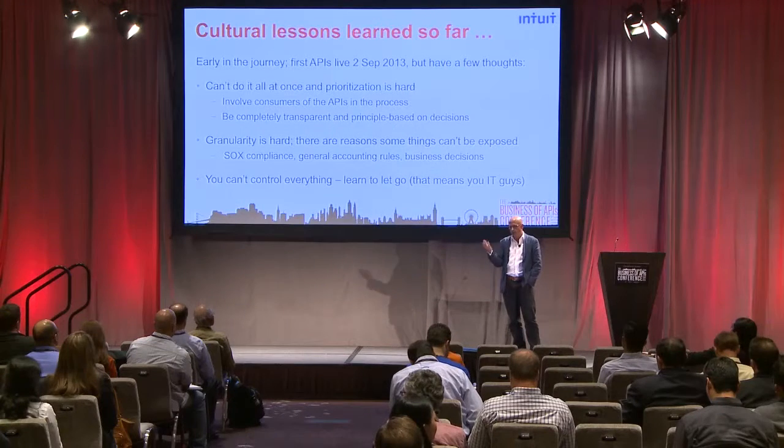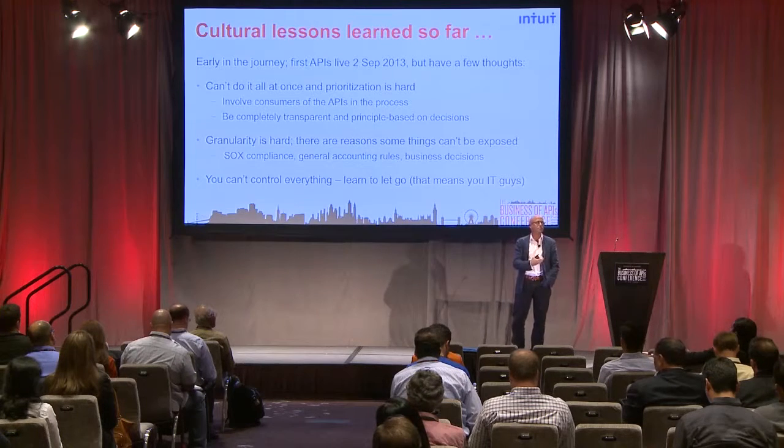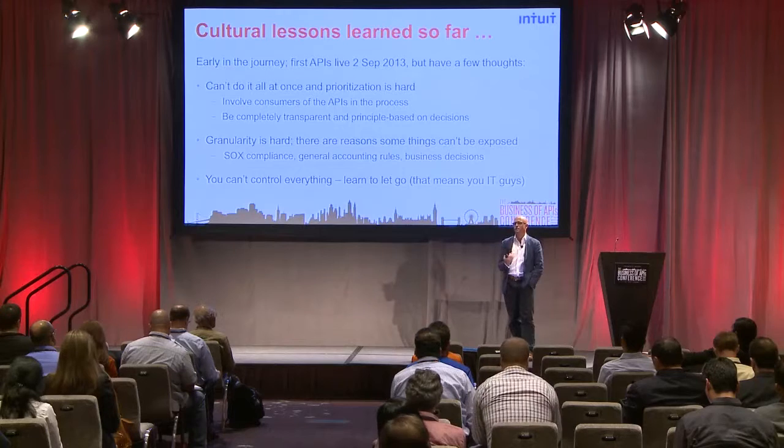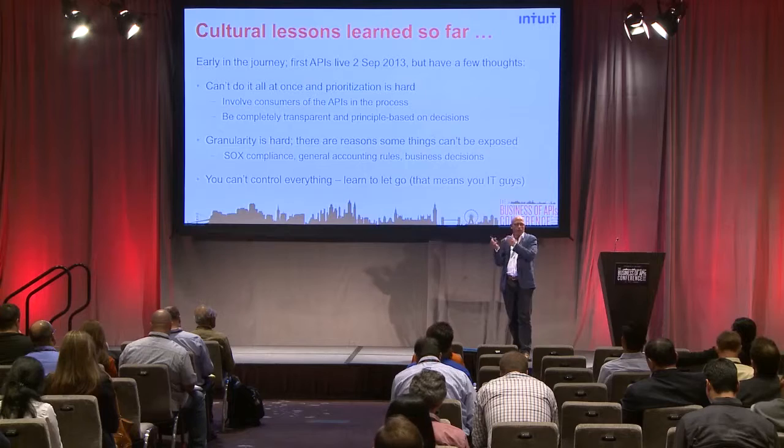The thing we've learned is to really involve the consumers of the API in the prioritization and be as transparent as possible about your principles for which set of APIs you're going to prioritize. We have APIs to allow end customers to self-serve — changing their billing address, canceling a product, adding a product so they don't have to call in. We also have APIs to allow our offerings to send billing information. Which of those APIs do we get done first because we can't do them all at once? That's what I mean by prioritization.